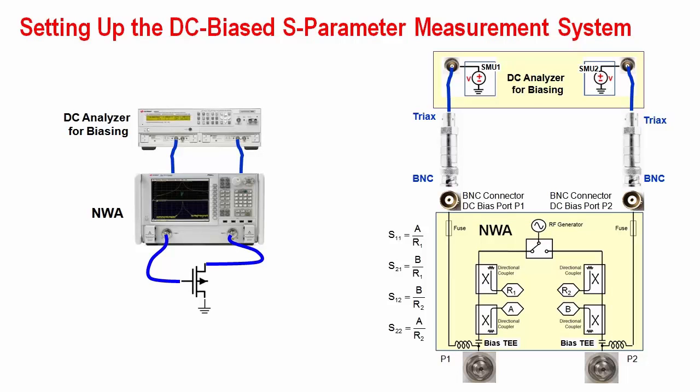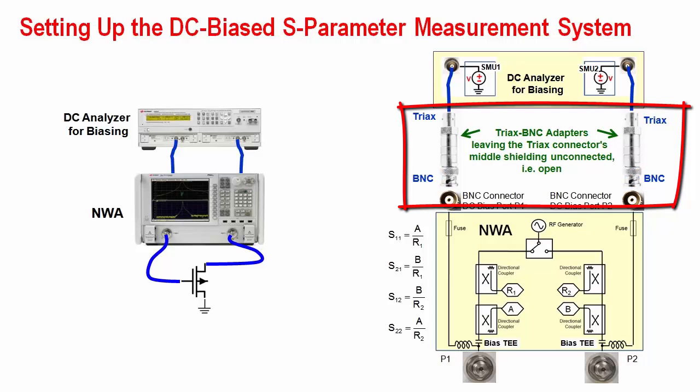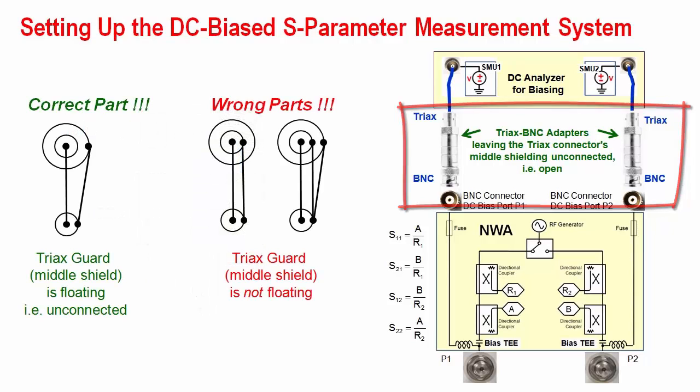But there is a problem. While the DC analyzer has triax connectors, the network analyzer has BNC. Therefore, we have to apply adapters. The challenge is to use an adapter which leaves the middle shielding of the triax cables absolutely unconnected. The correct adapter type shown is here on the left. Make sure to only use this one.